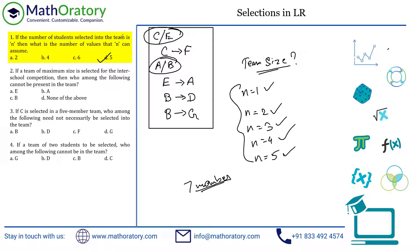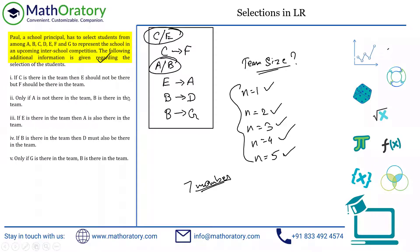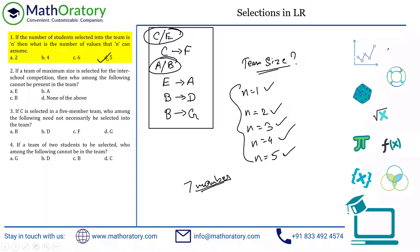So the possible values of N are one through five — five values in total. We are not looking for what values N can take, but how many values N can assume. The answer is five. That is option D — five possible sizes.